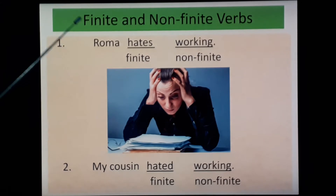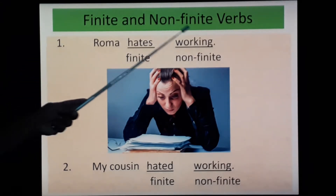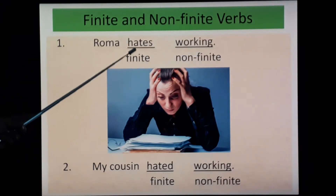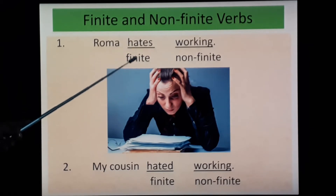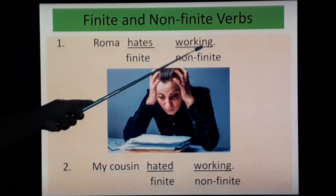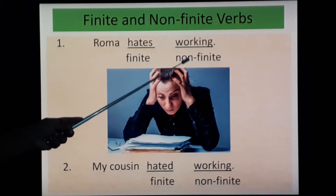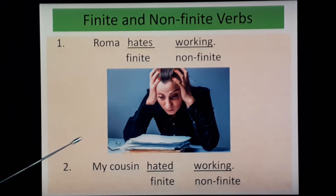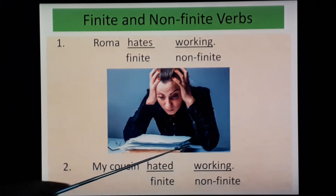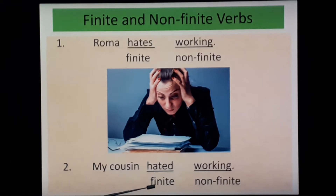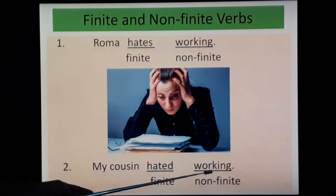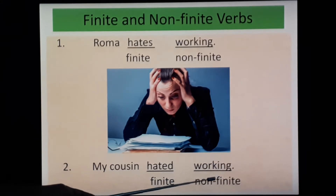For example, 'Roma hates working.' Here, 'hates' shows tense — that is why this is a finite verb. And 'working' doesn't show tense — that is why this is a non-finite verb. Same way, 'My cousin hated working.' 'Hated' is a finite verb because it shows tense — simple past — whereas 'working' doesn't indicate any tense, that is why this is a non-finite verb.